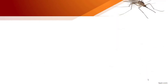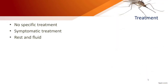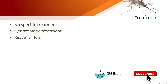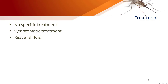Since dengue fever is caused by a virus, there is no specific medicine or antibiotic to treat it. Treatment for typical dengue is purely symptomatic — rest and adequate fluid intake for hydration are important. Aspirin and NSAIDs should only be taken under a doctor's supervision due to the risk of worsening bleeding complications. Codeine and other morphine derivatives can be given for severe headache and body pain.